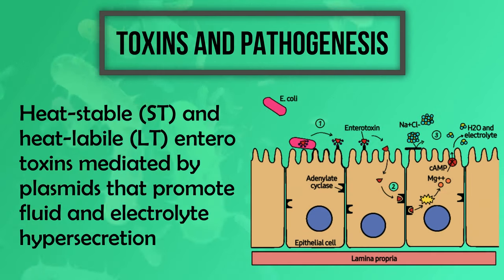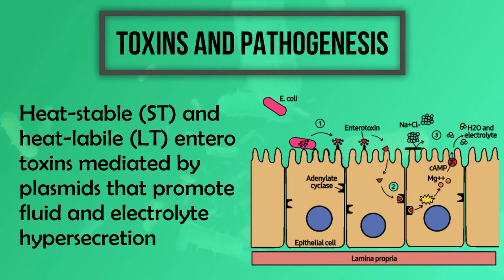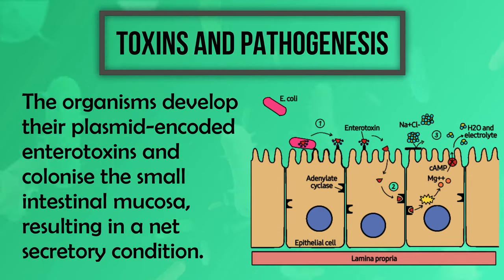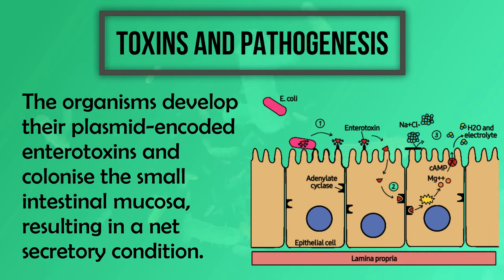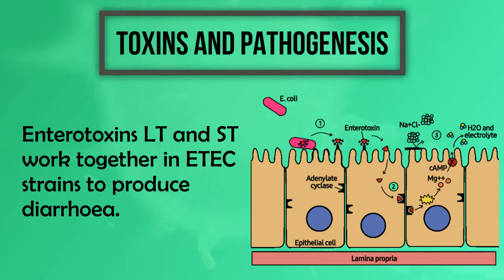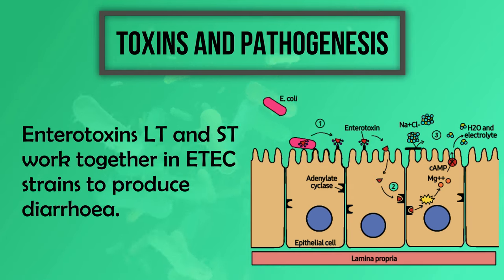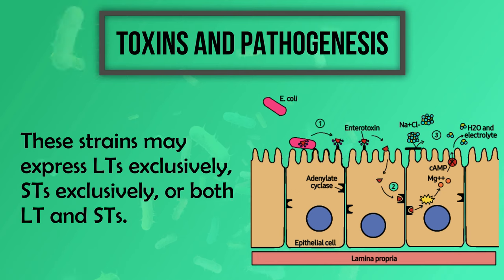Regarding toxins and pathogenesis: heat-stable and heat-labile enterotoxins are mediated by plasmids that promote fluid and electrolyte hypersecretion. The organisms develop their plasmid-encoded enterotoxins and colonize the small intestinal mucosa, resulting in a net secretory condition. In ETEC strains, heat-labile toxins and heat-stable toxins work together to produce diarrhea. These strains may express heat-labile toxins exclusively, heat-stable toxins exclusively, or both.